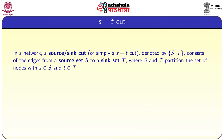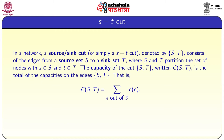We are going to define an s-t cut. In a network, a source-sink cut — or simply s-t cut — denoted (S, T), consists of edges from the source set S to sink set T, where S and T are partitions of all the nodes: S union T equals all vertices and S intersection T is empty. The main condition is that the source vertex s belongs to capital S and the sink vertex t belongs to capital T. The capacity of the cut, written c(S, T), is the total capacity on edges from S to T: c(S, T) equals the summation over edges e out of S of c(e).